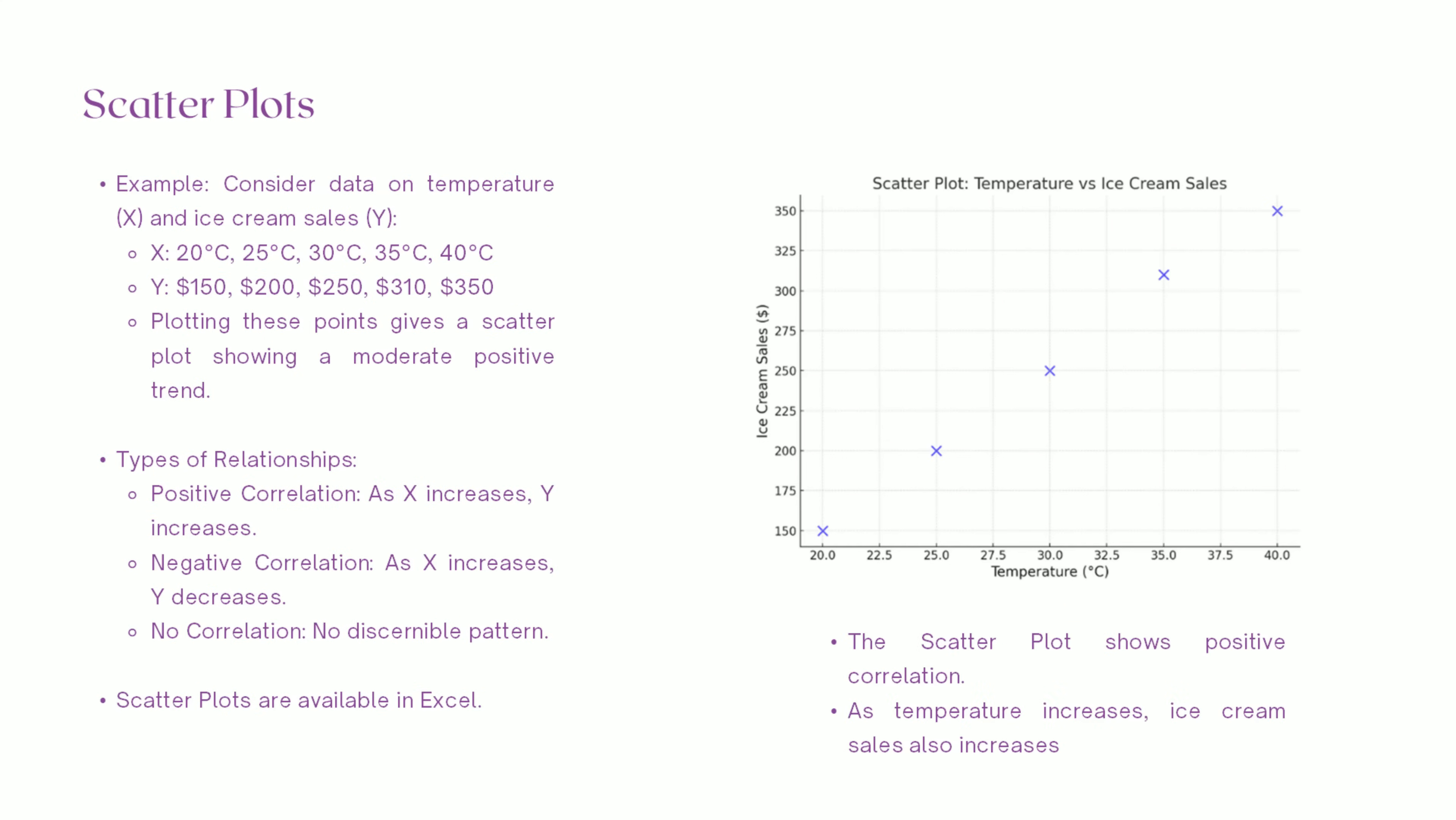For example, on a day when the temperature is 20 degrees Celsius, ice cream sales are $150. At 25 degrees Celsius, sales go up to $200. When we plot these points, we start to see a pattern. In this case, we notice a positive correlation: as the temperature increases, so do ice cream sales. This makes sense, right? Hot days make people crave ice cream.